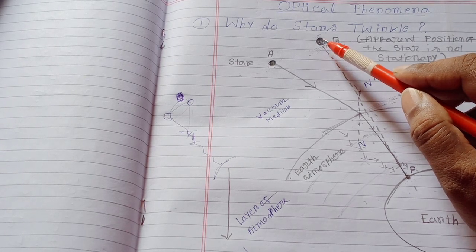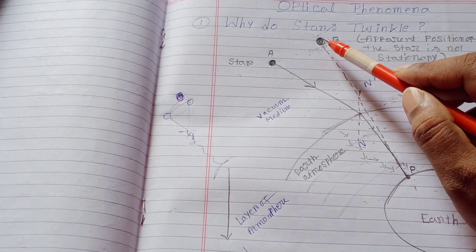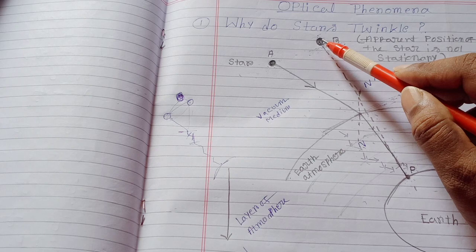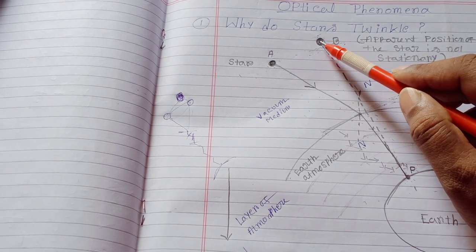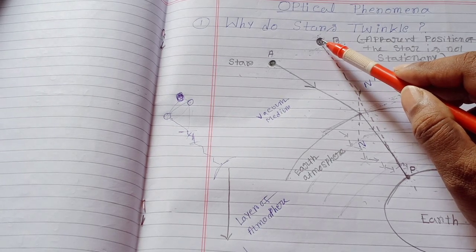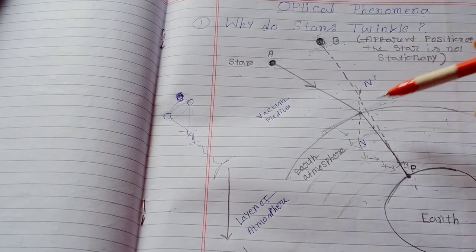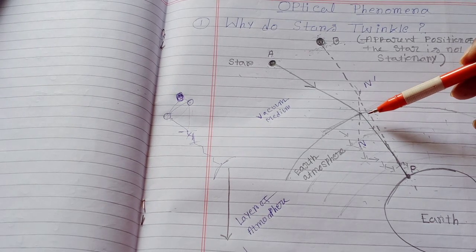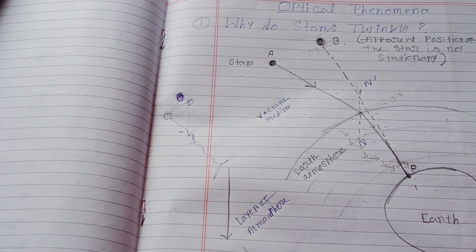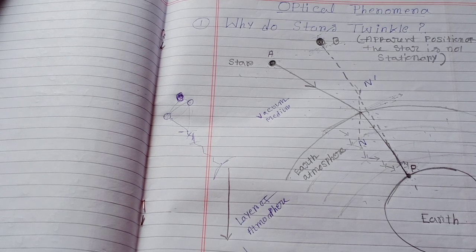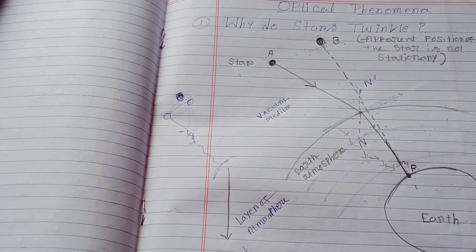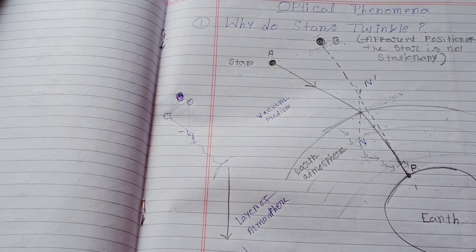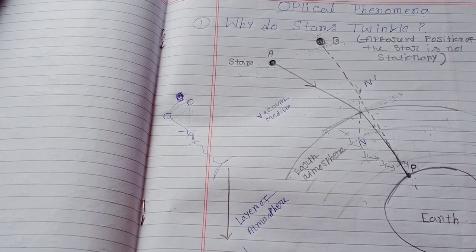But this apparent position of the star is not fixed. You have to find out the reason why the apparent position of the star is not fixed. To get the answer to this question, just have a look at this portion. We already discussed that Earth's atmosphere is contained of different types of layers like troposphere, stratosphere, magnetosphere, and hemisphere. The density level of all the layers of air are not the same.